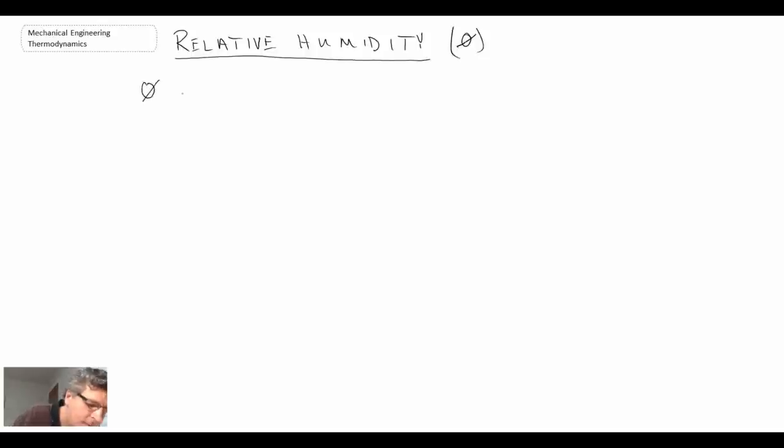And phi is defined as the mass of moisture in the air divided by the maximum moisture that the air can hold.